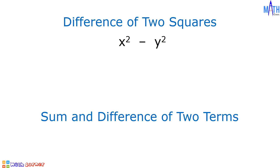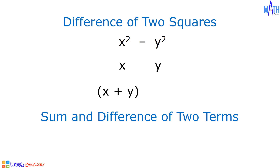Let us factor x squared minus y squared. Square root of x squared is equal to x, since x times x is equal to x squared. Square root of y squared is equal to y, since y times y is equal to y squared. Let us write this as the sum and difference of two terms. Then we have x plus y times x minus y. The factors of x squared minus y squared are x plus y and x minus y.